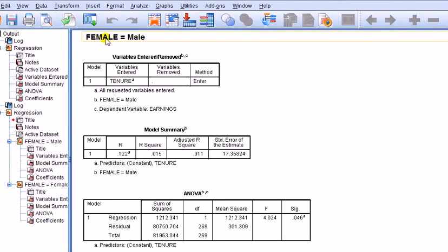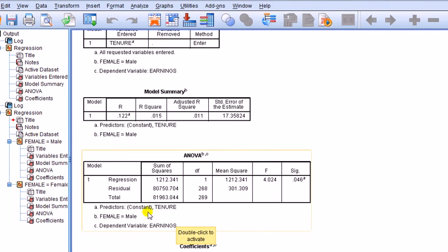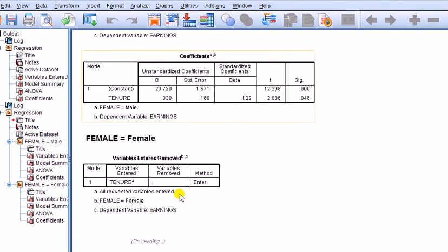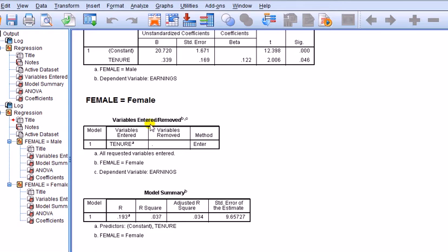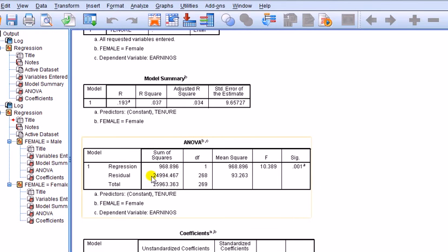We have regressions, one for each group. First of all, the dummy variable 'female' - just ignore that, that's just a label to say female dummy. We're looking at the male group RSS, record that. Next we look at the female, look for the ANOVA table.